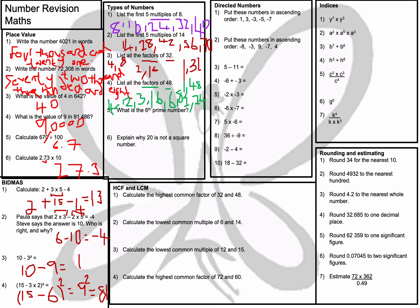Question number 5: what is the 6th prime number? A prime number has only 2 factors — 1 and itself. So the first prime is 2, then 3, then 5, then 7, then 11, and then 13. So the 6th prime number is 13.